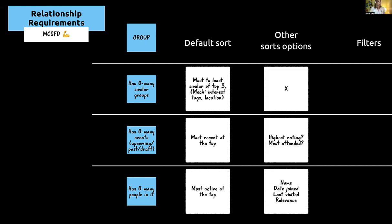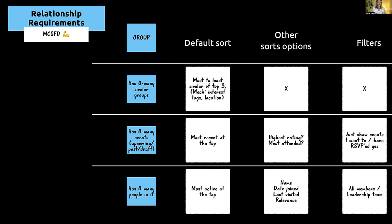There's a default sort and ways the user can switch it, plus additional filters. For example, if I'm looking at all people in a group, I should be able to see all members versus the leadership team. Or if the group has zero-to-many events, what if I'm looking at all past events — could I check a box and say 'just show me the events that I went to'? How many events have you actually gone to for, say, UX Happy Hour — 10, 5? That might play out in the UI something like this.